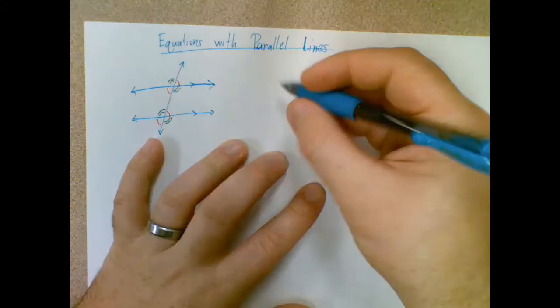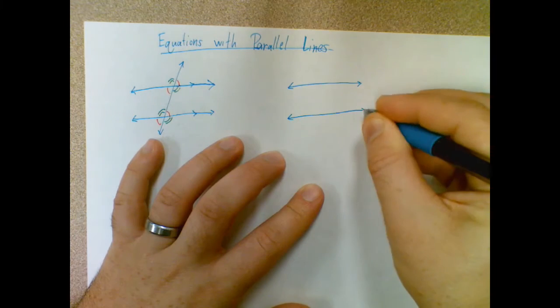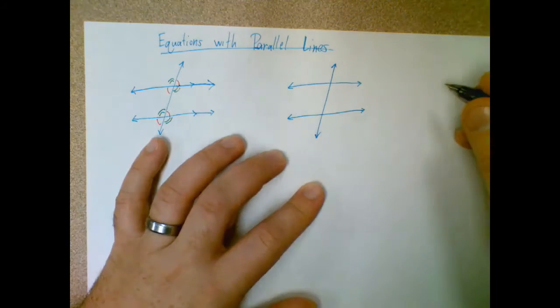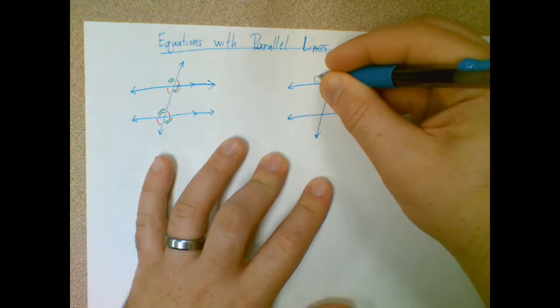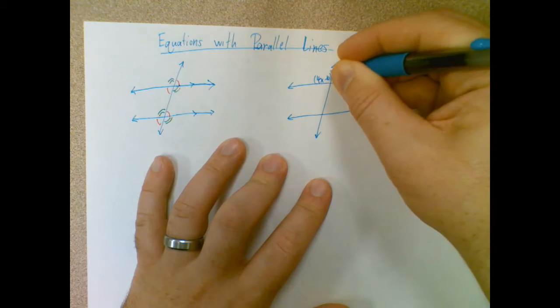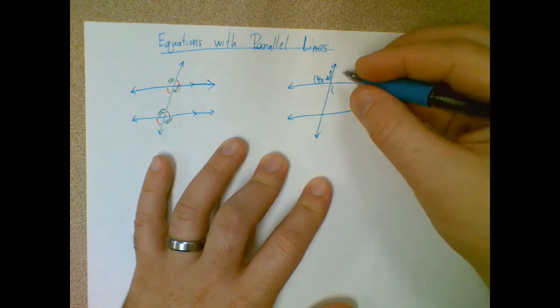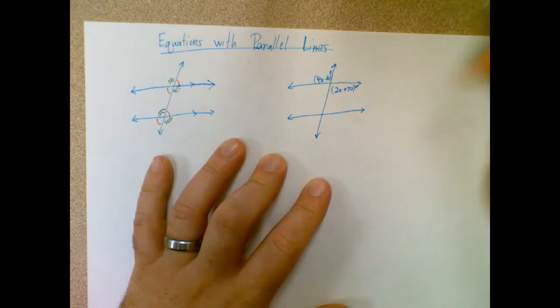So how does that help us? Well, instead of having a specific angle like we did last time, sometimes you'll have things like this one up here is 4x minus 10 degrees and this one down here is 2x plus 70 degrees.